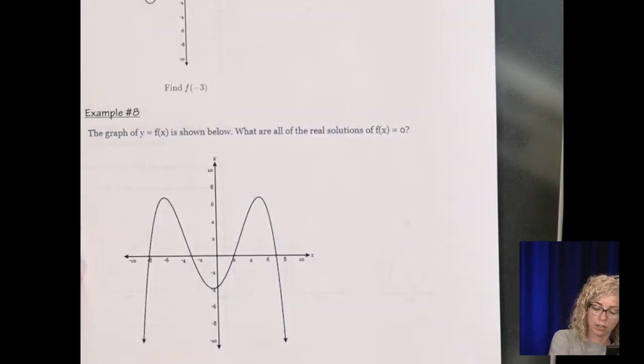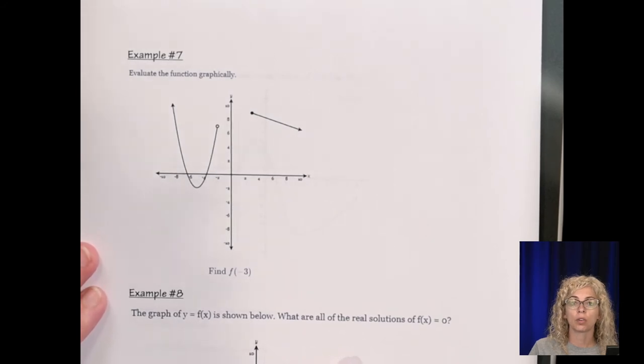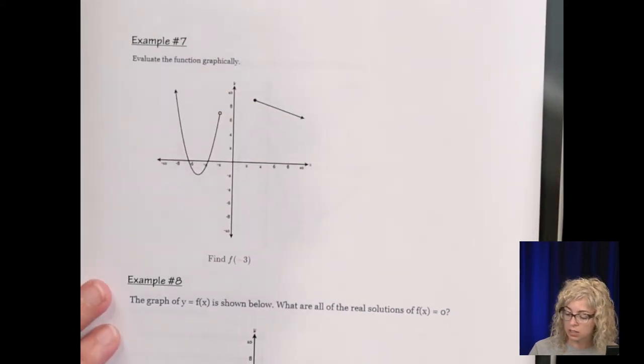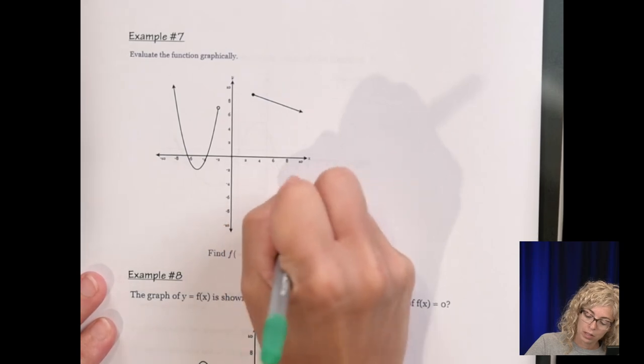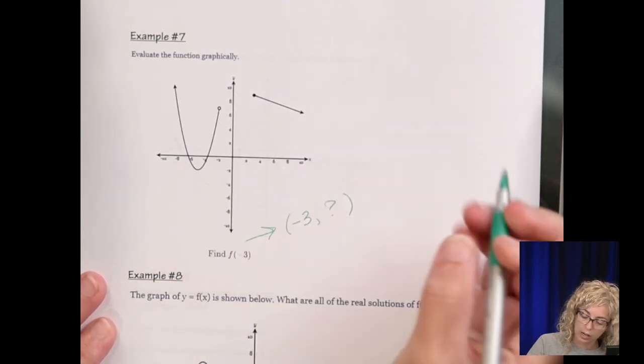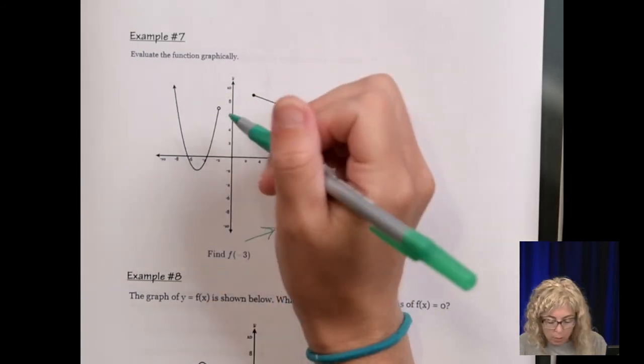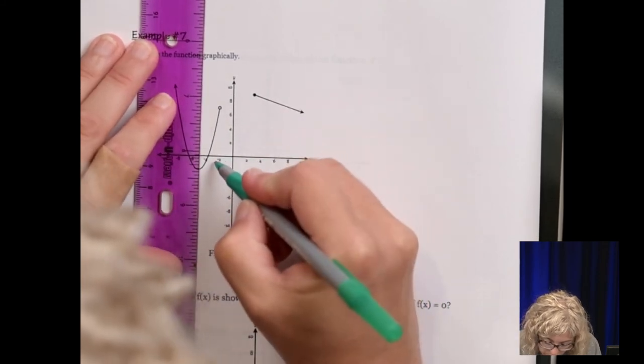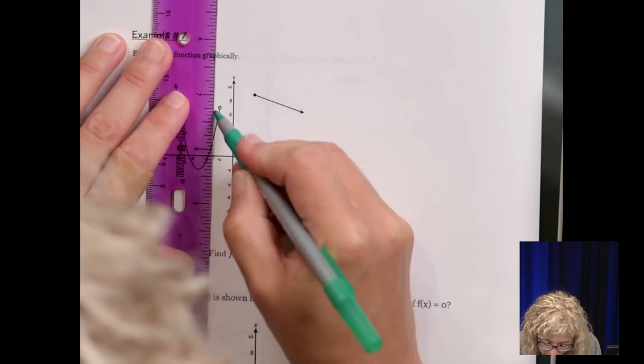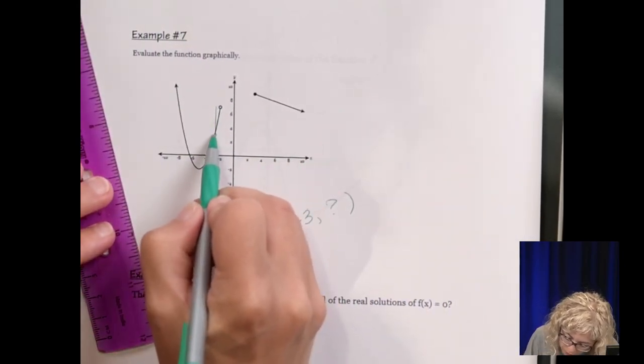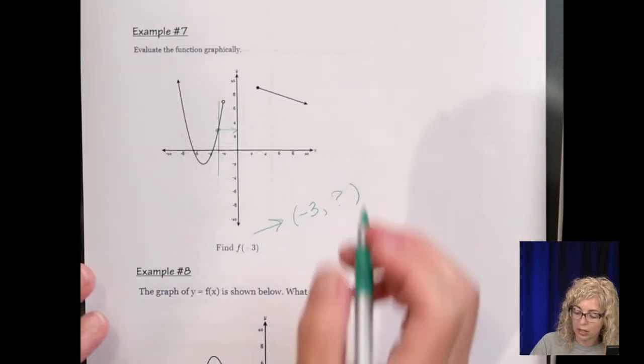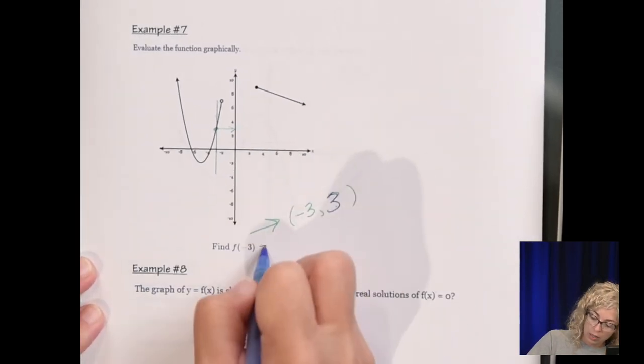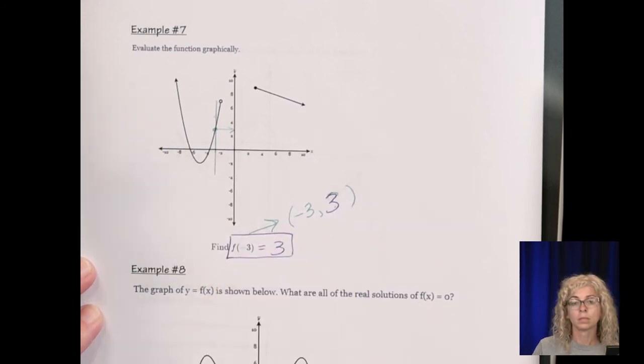Number 7. Evaluate the function graphically. So this is a piecewise function. Because it's in pieces. And we need to find f of negative 3. So remember, it says x is negative 3. What's y? So we go to negative 3 on the x-axis. And we go up. Now my lines are so light. So I'm going to estimate that it's right in the middle. Line up my ruler. So it looks to be about this point right here, which I go across. And that would be the point negative 3, 3. So f of negative 3 equals 3.